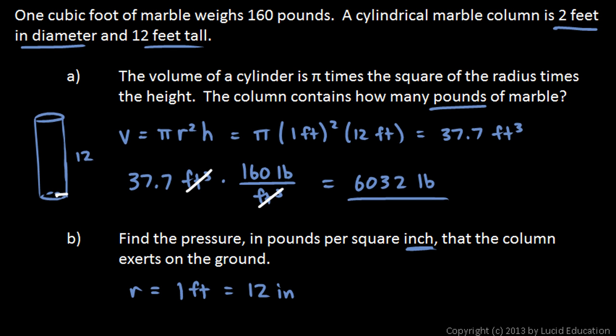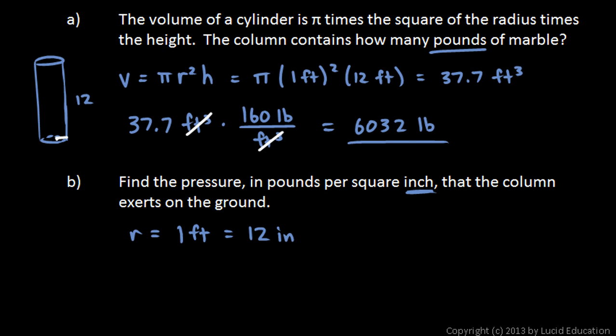We're dealing with inches. Then we can find the area. This will be the area of that circle, the area of the bottom of the column. The area of a circle is pi times the radius squared. So this is going to be pi times 12 inches squared. This is pi times 12 squared, which works out to 452, and the inches is squared. So that's square inches. That's the area in square inches.